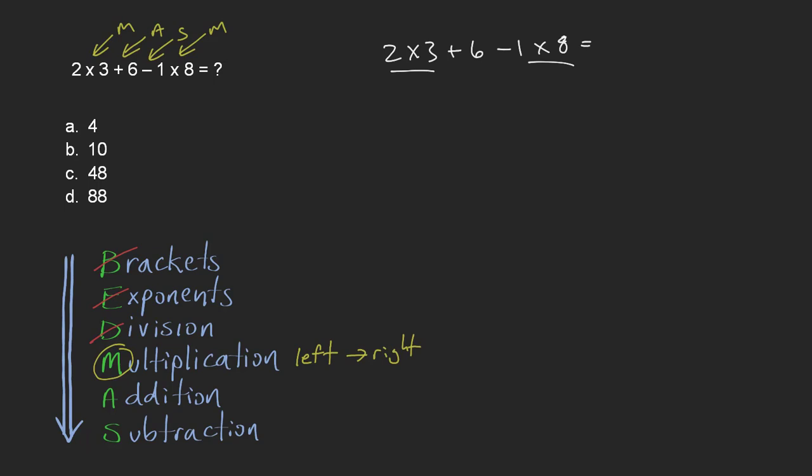So 2 times 3 comes first, so that's 6, and I might as well write it on the same line here. 1 times 8 is just 8. Okay, we've dealt with our multiplications.